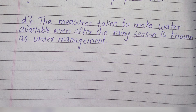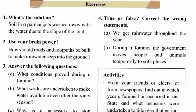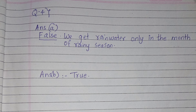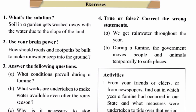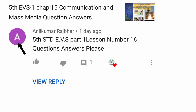Question number four — True or False, correct the wrong statements. First: We get rainwater throughout the year. Answer: False. We get rainwater only in the rainy season, which is from June to September. Second: During a famine, the government moves people and animals temporarily to safe places. Answer: True.